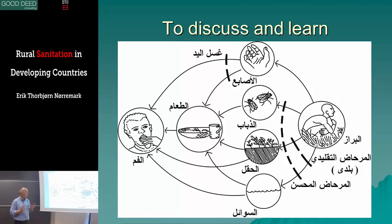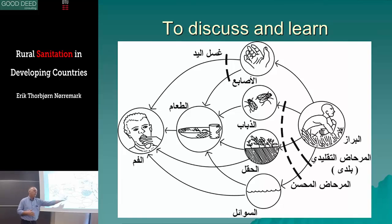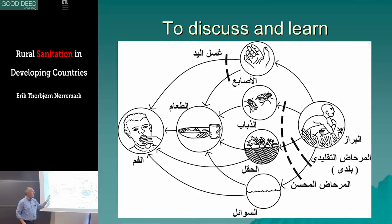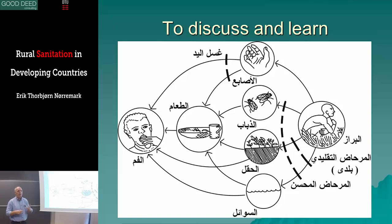This is the F-diagram from Darfur, where they speak Arabic and read from the other side — that's why it's turned around. You can cut out the round circles and the arrows, and then make people put it together in the way they think is logical. During the discussion, they will learn a lot compared to you just explaining it to them.